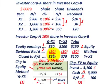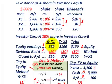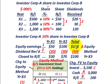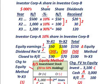For year X1 and year X2, our equity earnings — the share of net income that Corporation A gets from Corporation B — is $50,000 for year X1 and $100,000 for year X2, for a total of $150,000. Then the dividends received: $20,000 in year X1 and $30,000 in year X2, for a total of $50,000 over those two years.